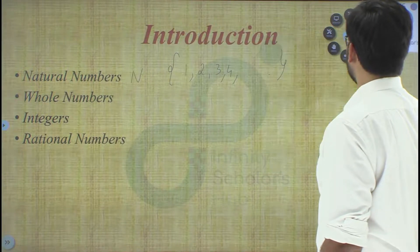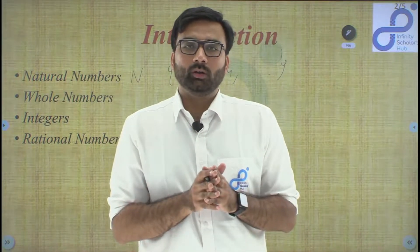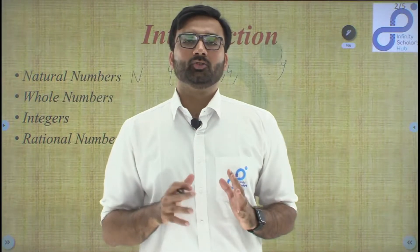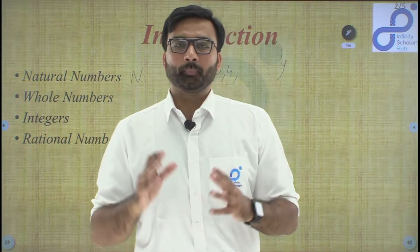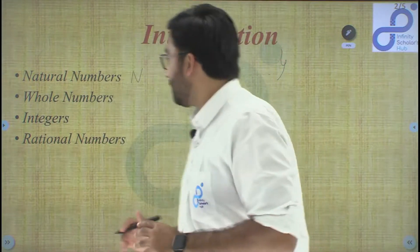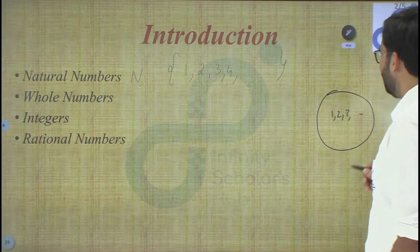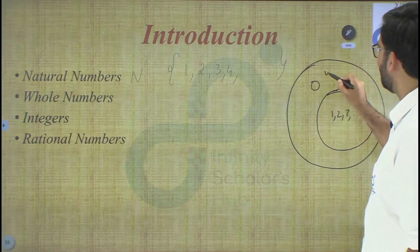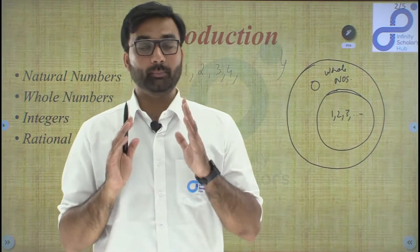Now let's take the next group: whole numbers. Say the function in the hall is over and all chairs are taken back — there are zero chairs. Zero is an important number. When we bring zero together with the group of natural numbers, we call this whole group 'whole numbers.' So zero is included in whole numbers but not in natural numbers.